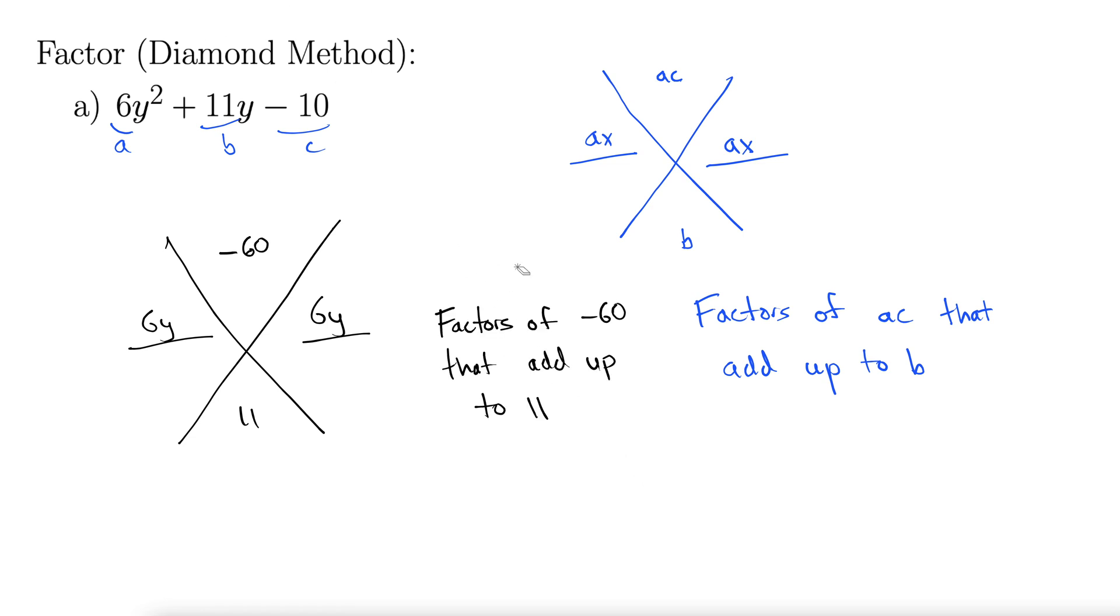So in this example, that's factors of negative 60 that add up to 11. So let's find some factors of negative 60 and see what we can do there. So what I do is I just start looking at the factors of 60 and don't worry about the negative. In the last minute, I'll worry about how the negative sign fits in.